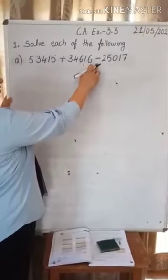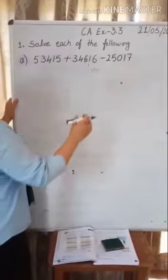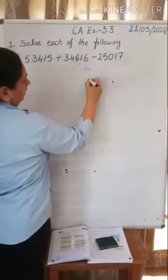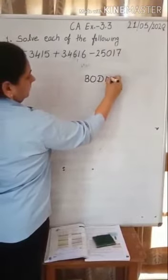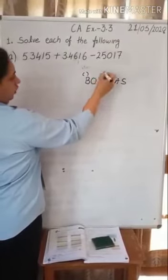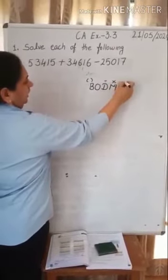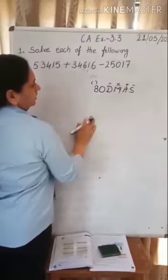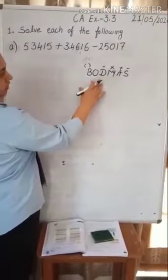Before doing this question I will explain BODMAS formula. BODMAS formula is B for bracket, O for of, D for divide, M for multiplication, A for addition, and S for subtraction. We will do according to this in this question.